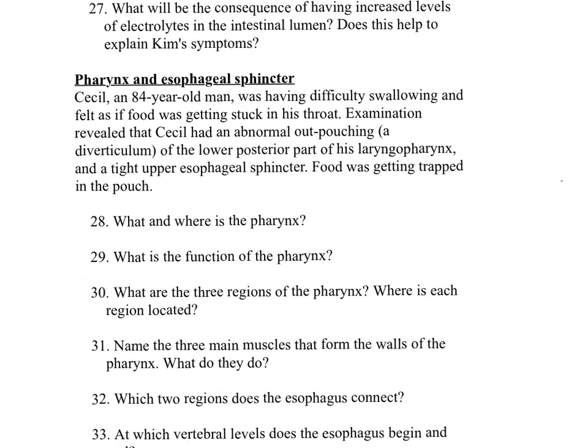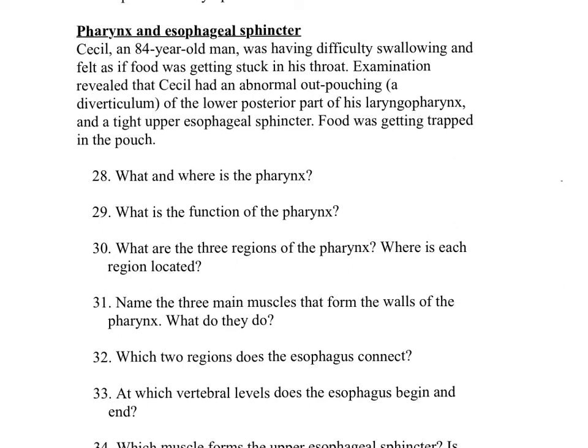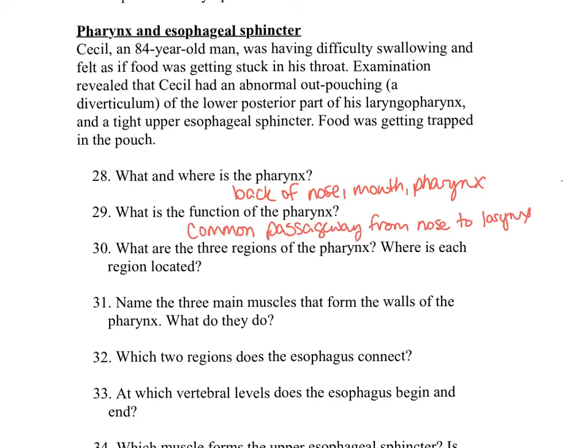The next case study is the pharynx and esophageal sphincter. Cecil, an 84-year-old man, was having difficulty swallowing and felt as if food was getting stuck in his throat. Examination revealed an abnormal outpouching — a diverticulum — of the lower posterior laryngeal pharynx and a tight upper esophageal sphincter. Food was getting trapped in the pouch. Question twenty-eight: what and where is the pharynx? The pharynx is a U-shaped fibromuscular tube located at the back of the nose, mouth, and larynx. Question twenty-nine: what is the function of the pharynx? The pharynx connects the nose, mouth, larynx, and esophagus, and serves as a common passageway for solids, liquids, and air.